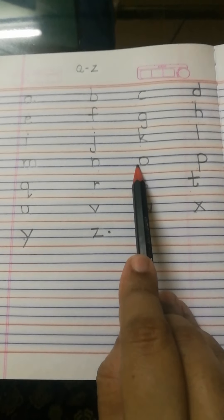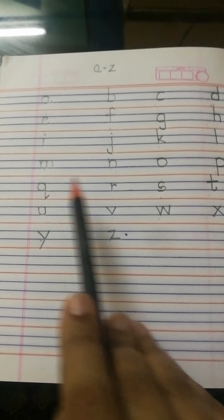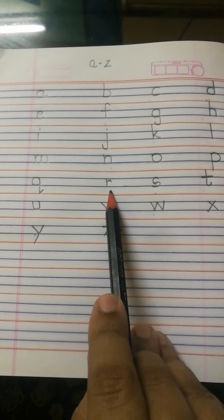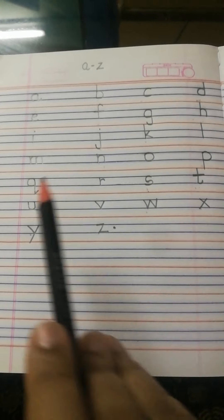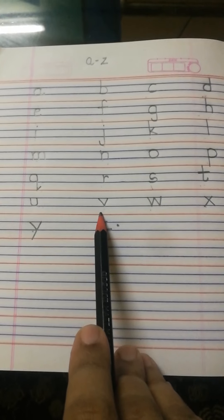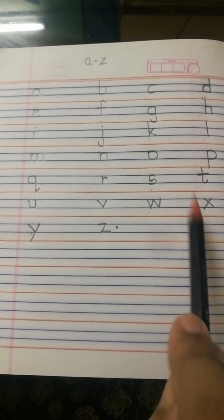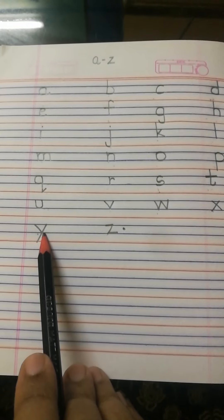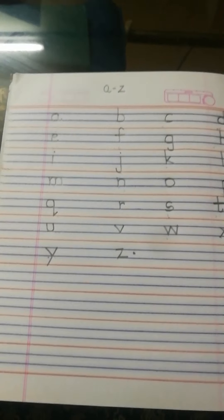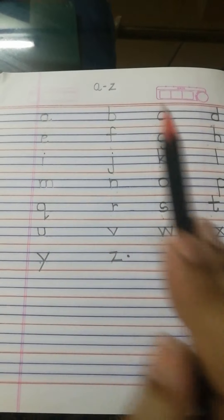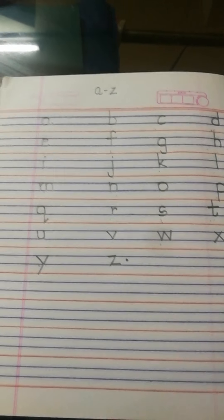Small n, small o, small p, small q, small r, small s, small t, small u, small v, small w, small x, small y, small z. You all know small a to z and how we write in English notebook, right?